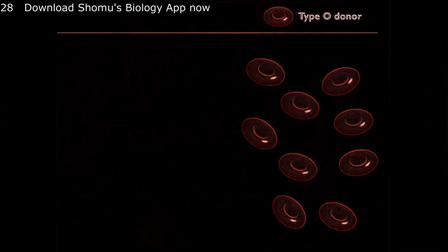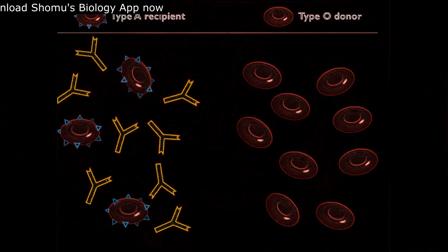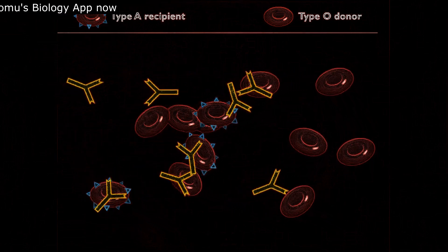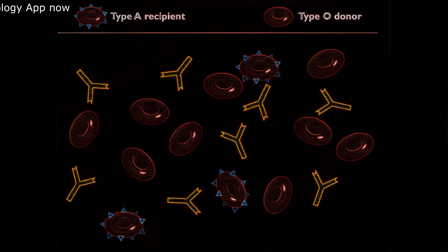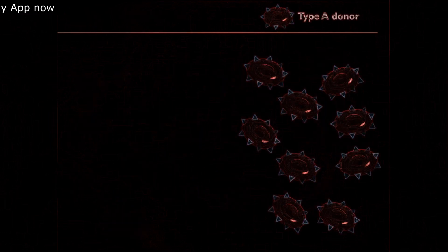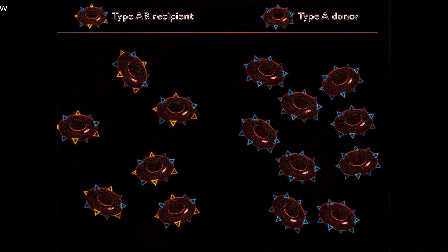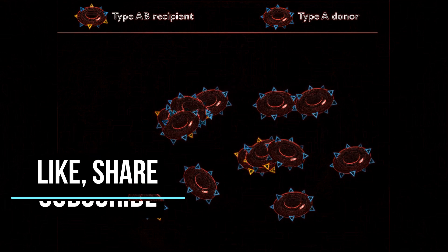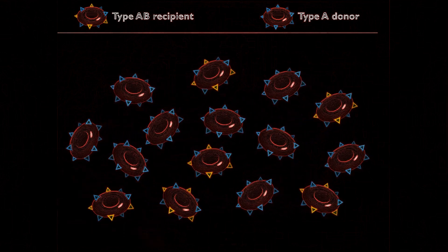Persons who are type O lack A and B antigens on the surface of their red blood cells and are therefore universal donors — there is no lysis, no complement fixation. Persons with type AB blood lack antibodies against A or B antigens and are therefore universal recipients, with no lysis and no complement fixation.